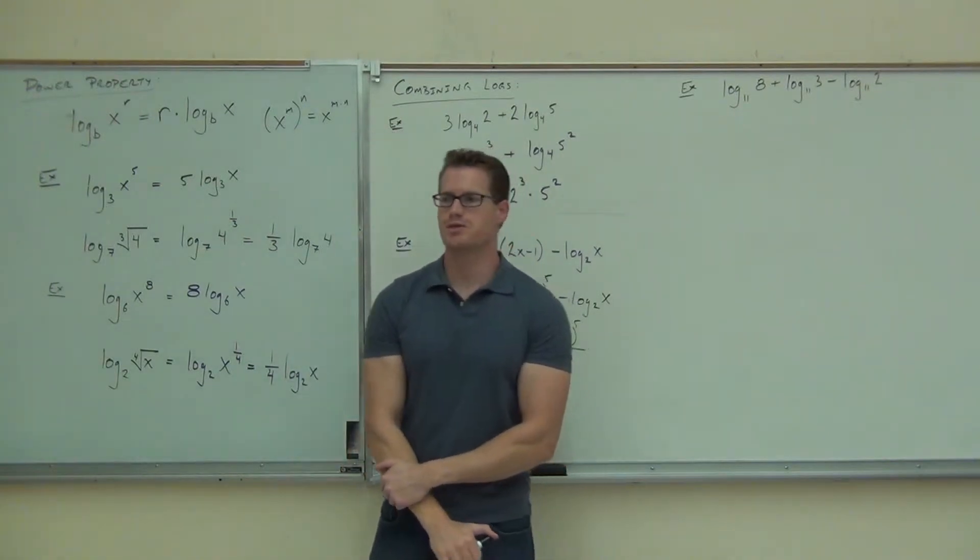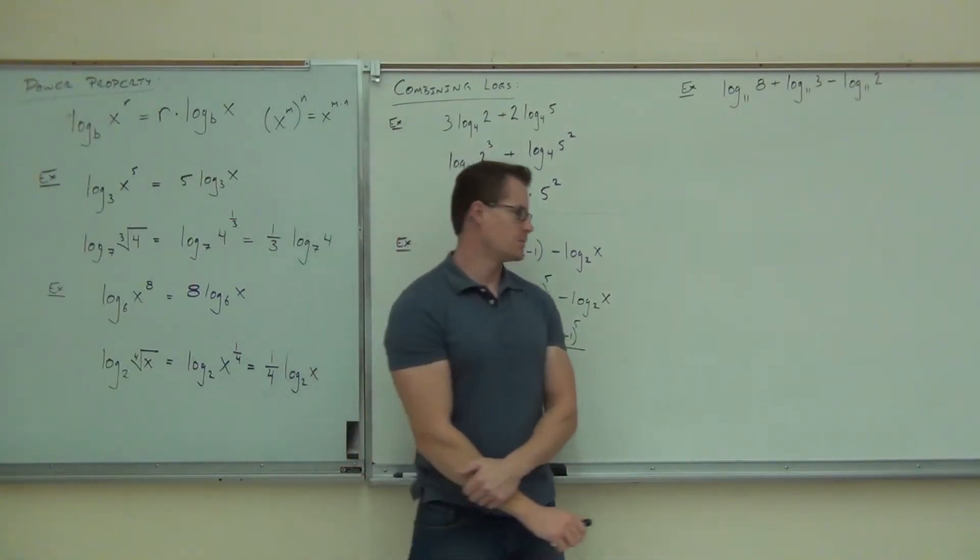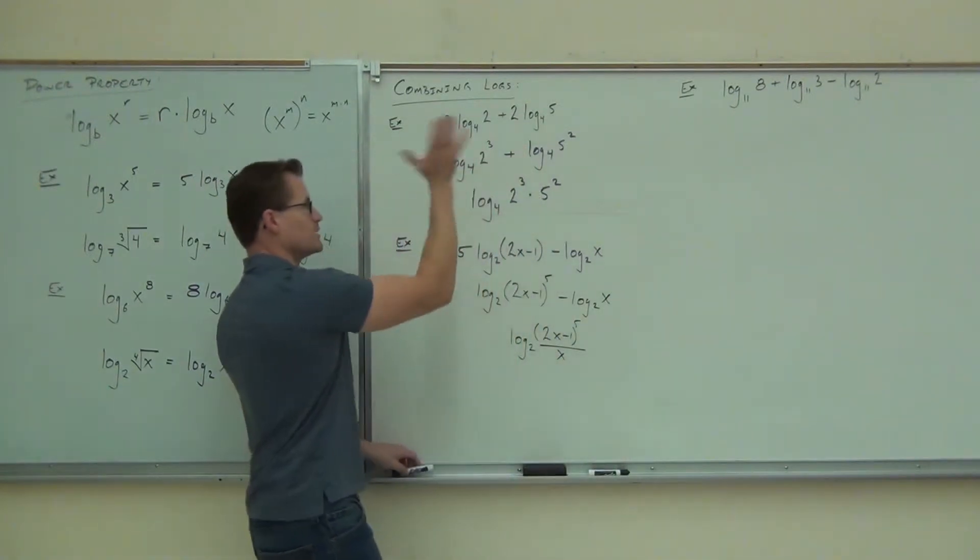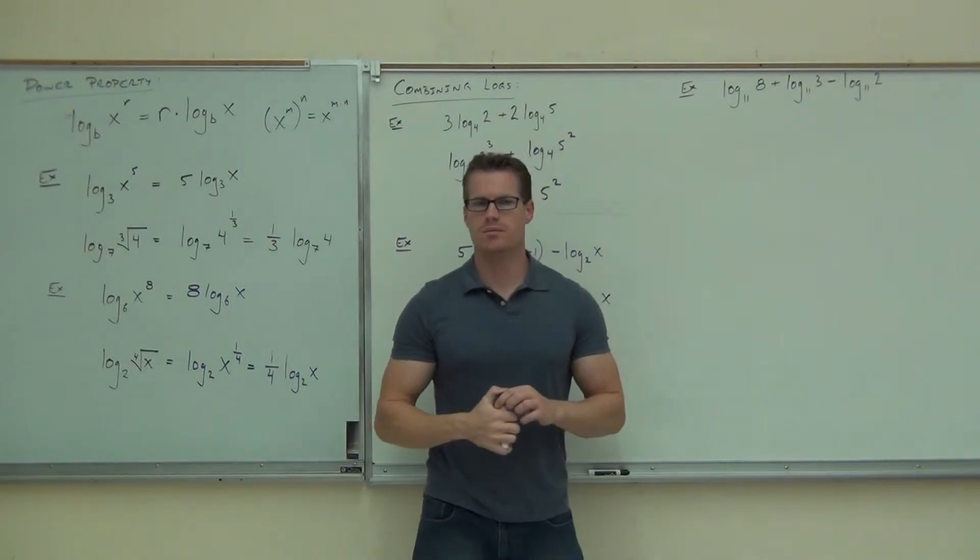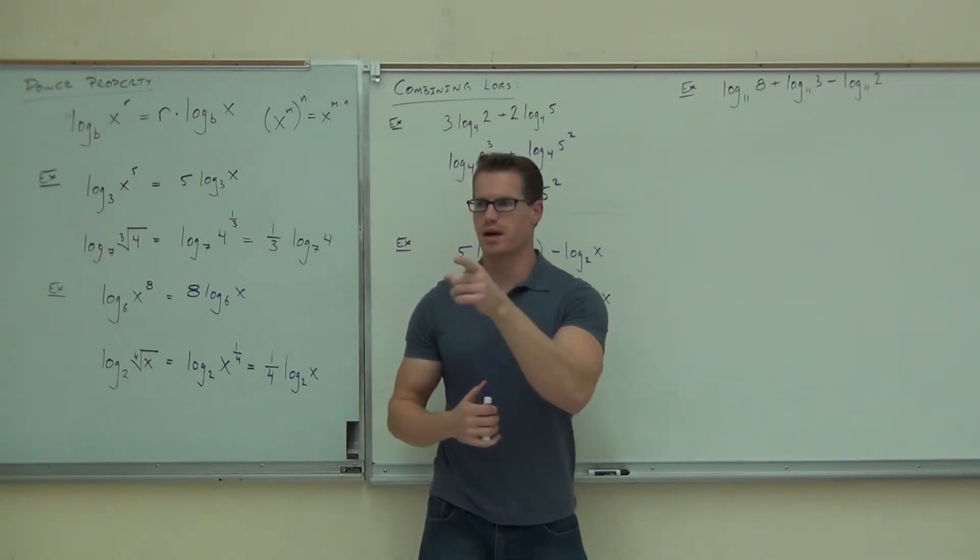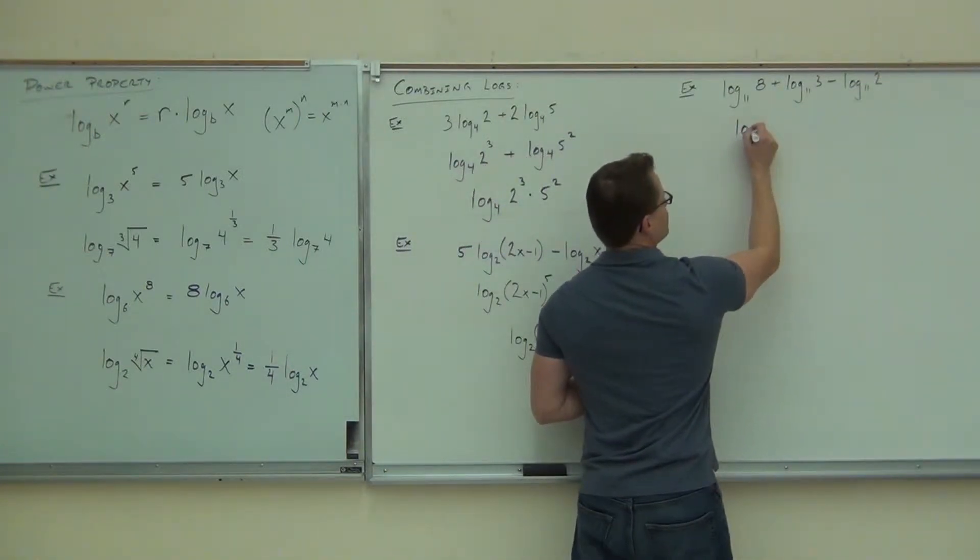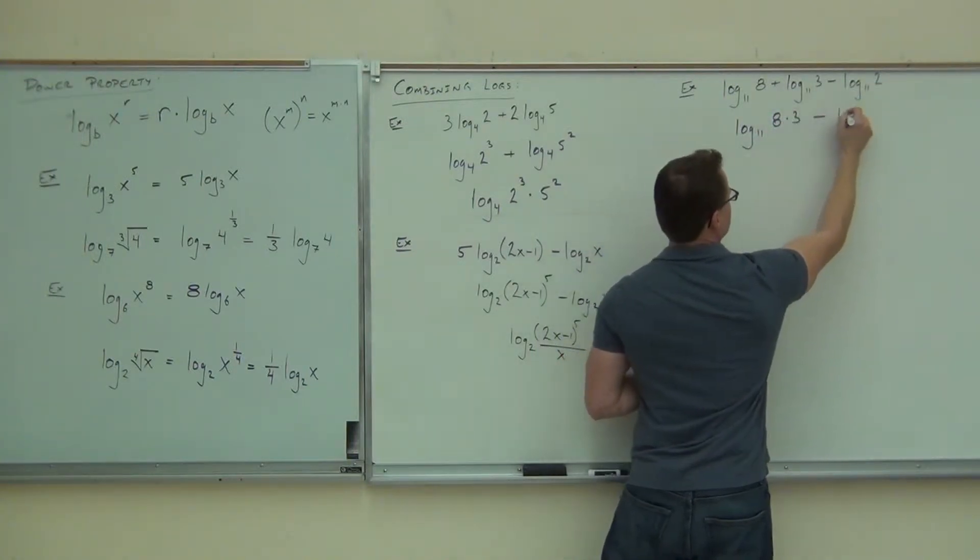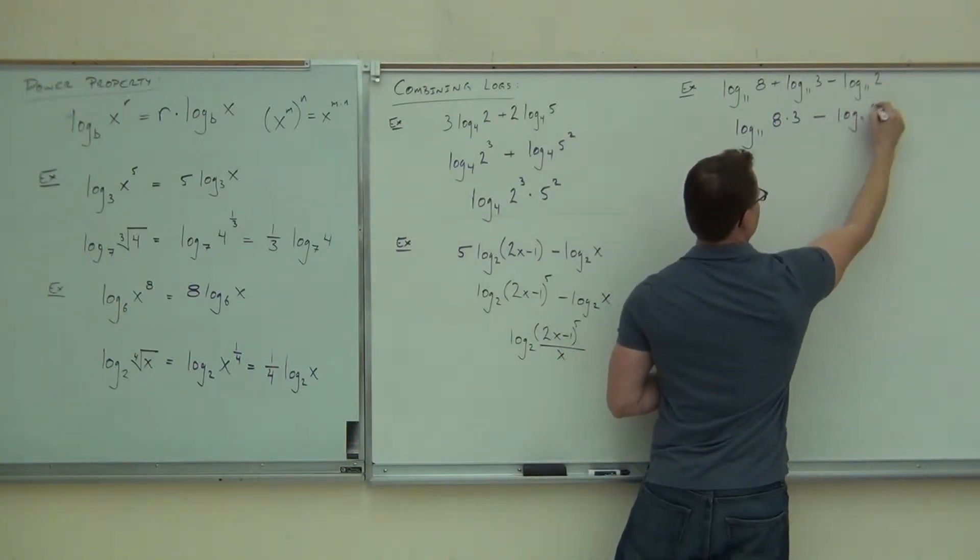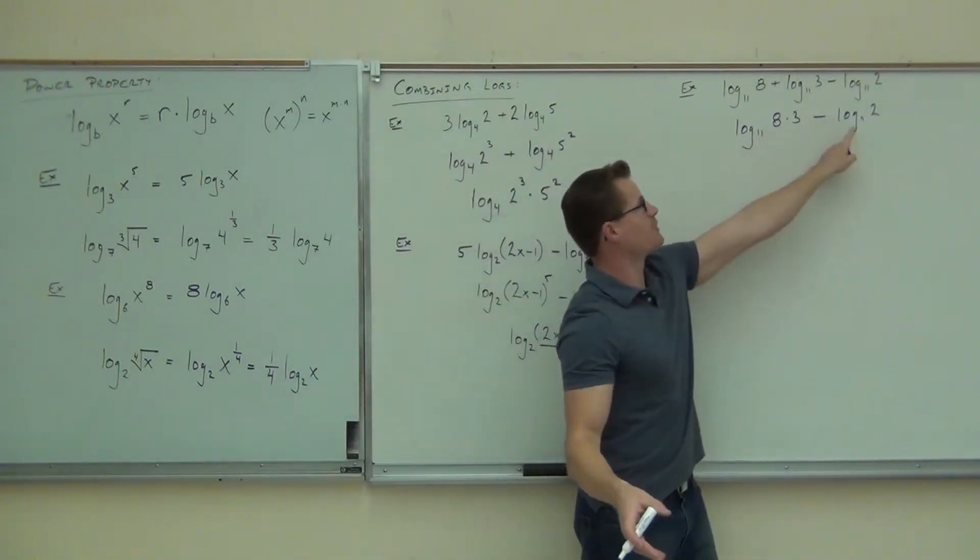Do I have any exponents to deal with in this problem? No. Well, it's kind of nice. I don't have that little deal that I've got to do. It's not bad. What can I do? Combine the addition first and then. Sure. The addition one gets combined as what? So the first two, I could do log base 11 of 8 times 3. All over 2.